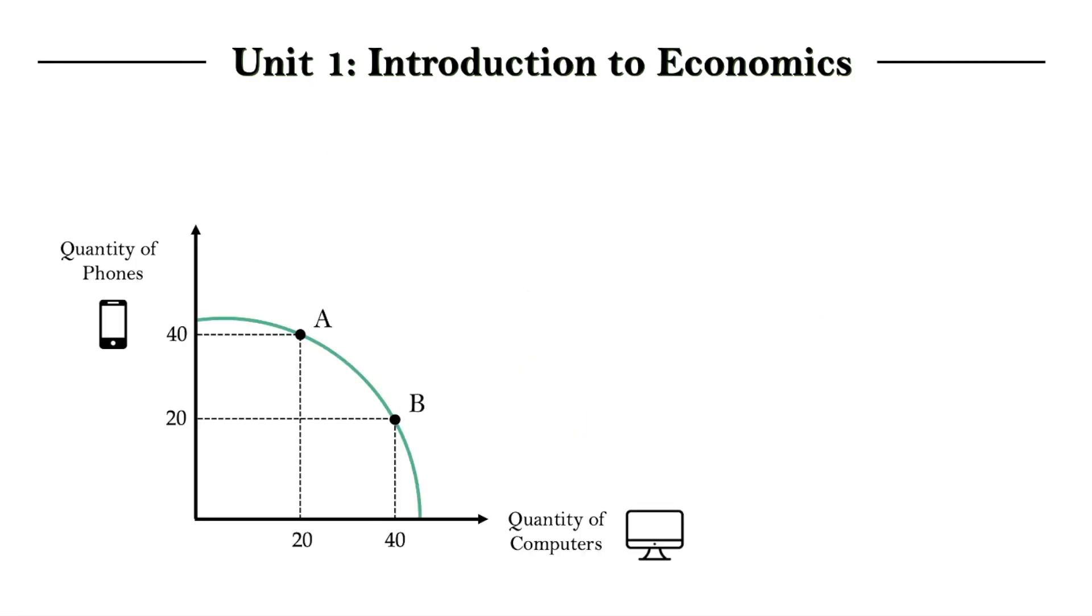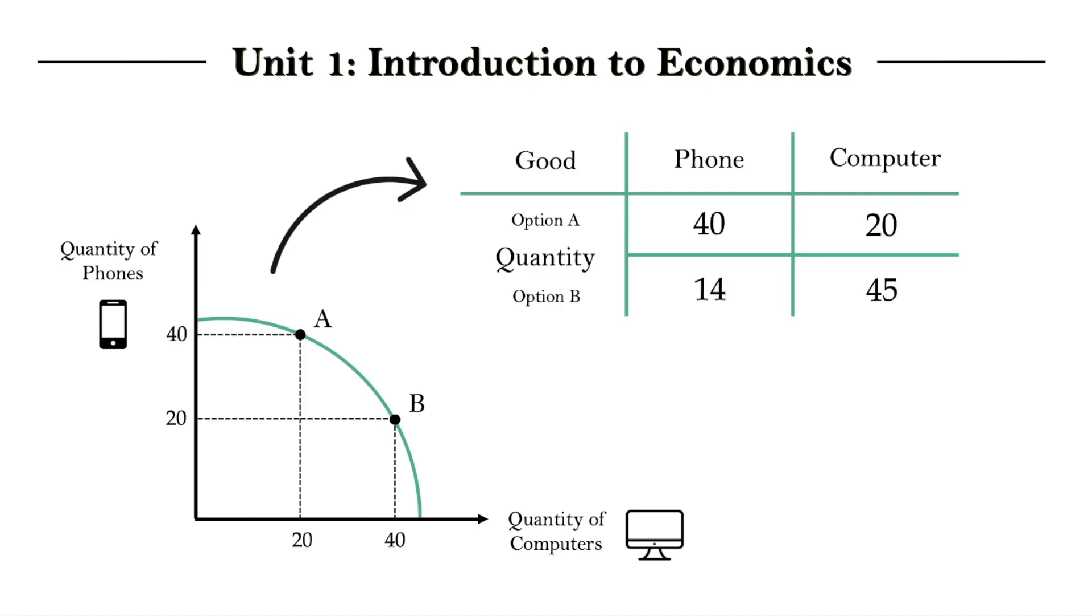So, let's bring this example and organize the two scenarios A and B on a table, showing the quantity of both phones and computers we can produce at each choice. Now, movement along the PPC curve illustrates the choice being made in the economy. And the changes in quantity between the different points on the curve actually illustrate opportunity cost, which we covered before, and it's the cost of making a choice.